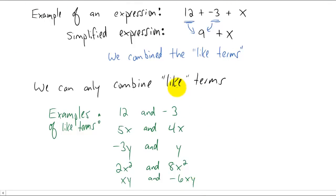So these are all examples of what we call like terms. Obviously from above, twelve and negative three were like terms because we combined them to make nine. Five x and four x are like terms because they have the same variable, that's x, and it's raised to the same power. The power of an x in each one of these cases is just one. If we move down a bit, two x squared and eight x squared are like terms because they have the same variable, that's x, raised to the same power of two.